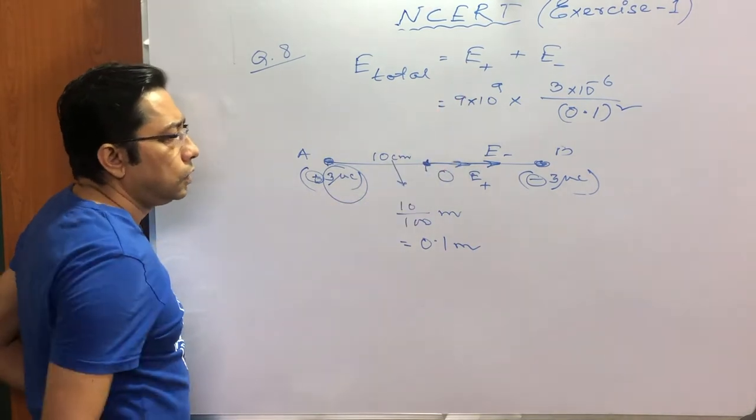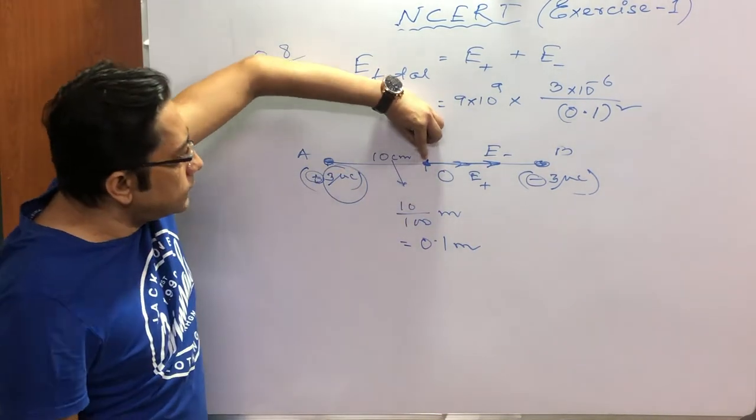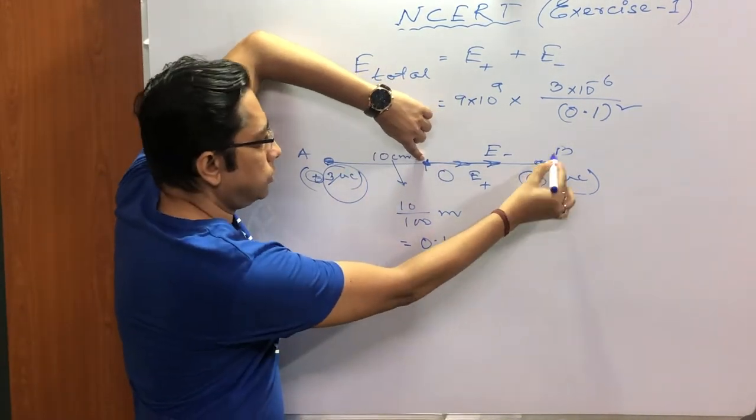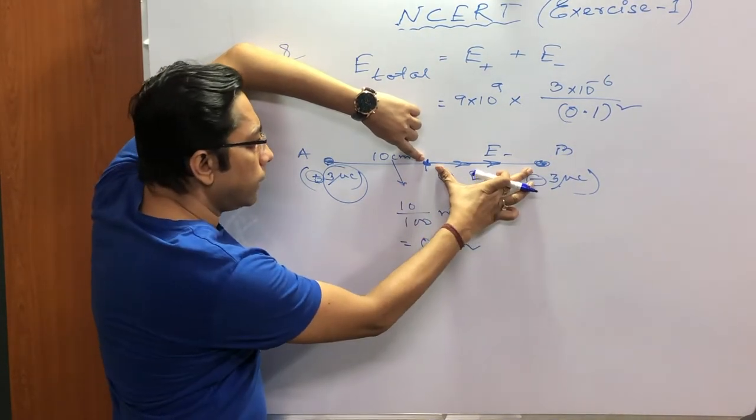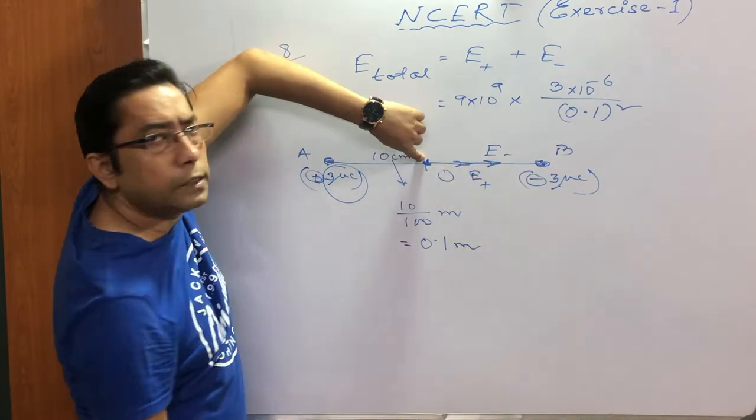E plus. What would be the electric field at the same point due to the minus charge at B? That is also 3 microcoulomb, the distance is again 10 centimeter, so the electric field would be the same.